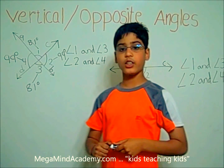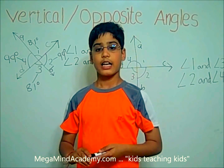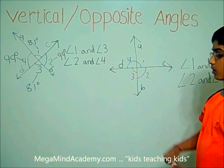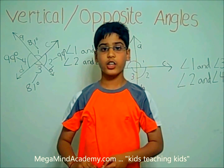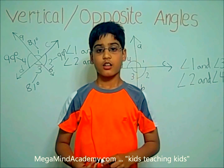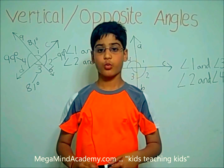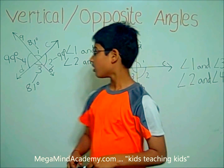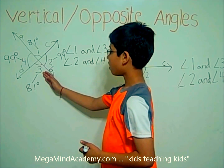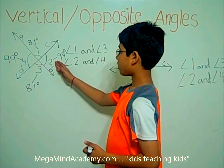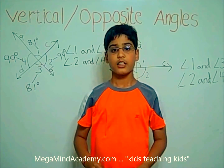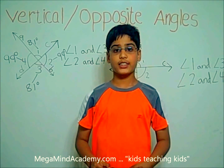Today we learned about vertical or opposite angles. Vertical angles are the angles that are opposite to each other when two lines cross — like angle 1 and angle 3, and angle 2 and angle 4. Thank you for watching this video.